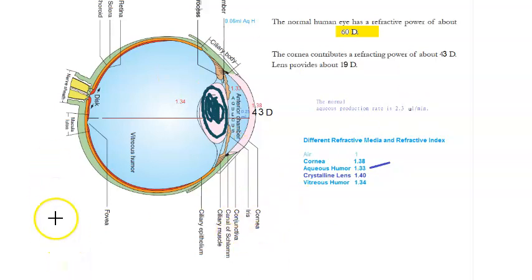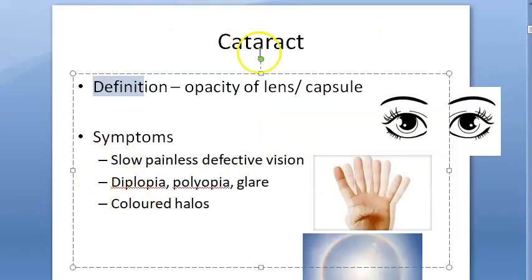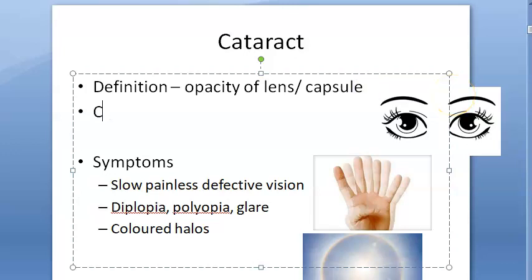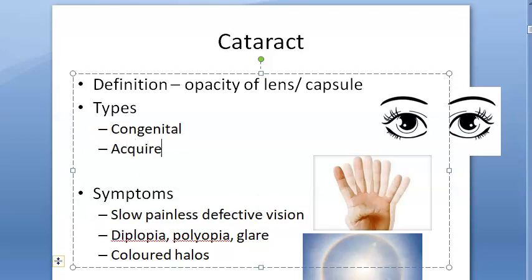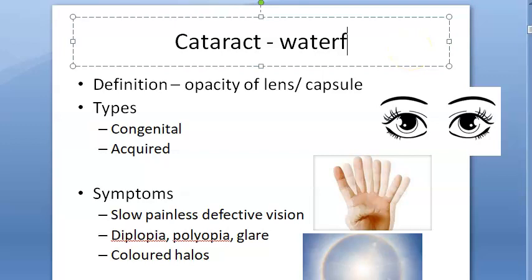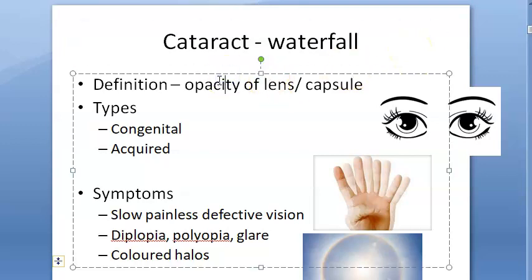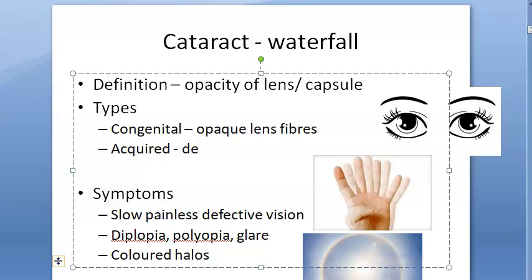There are two types of cataract: congenital and acquired. Congenital cataract is usually because of opaque lens fibers, which these people will have congenitally. Acquired cataract is because of degeneration, which leads to opacification.